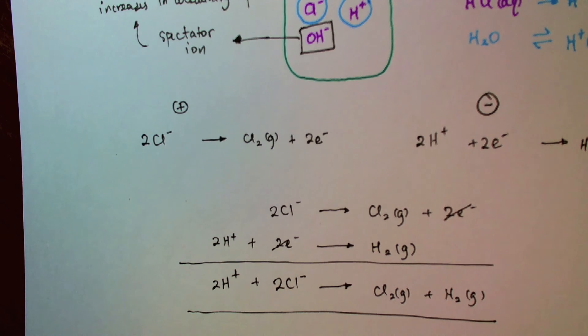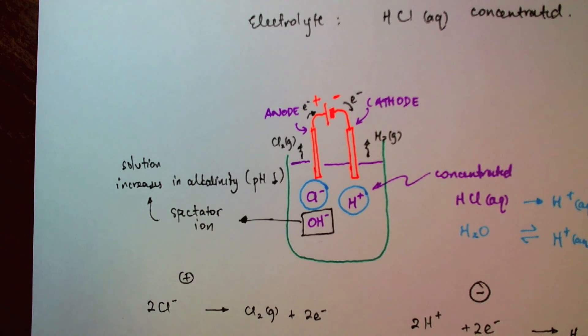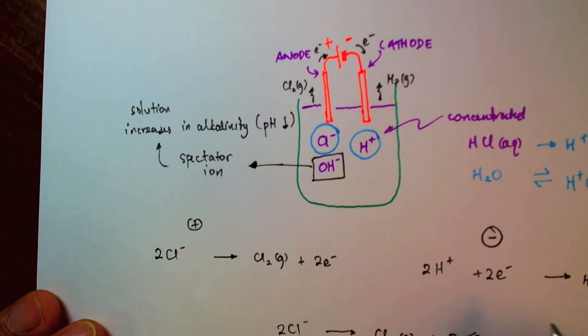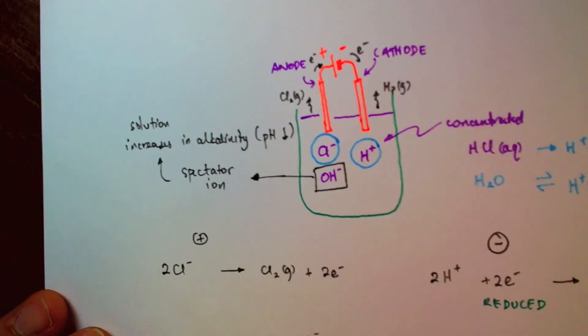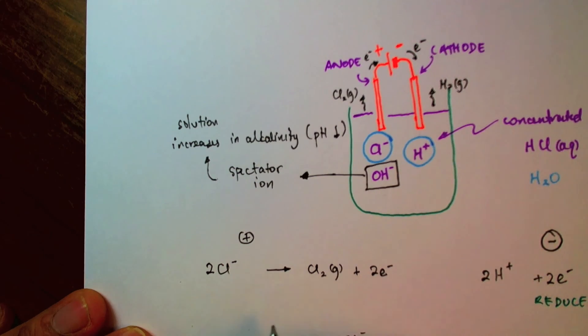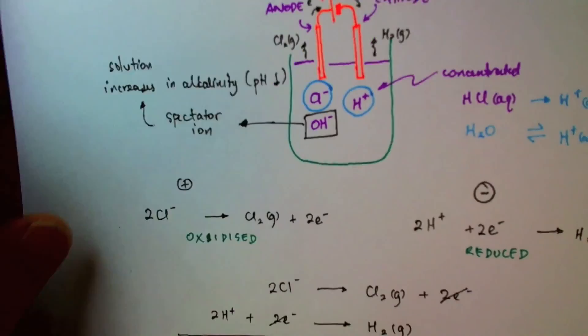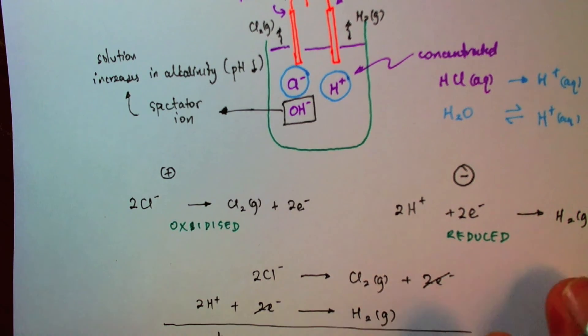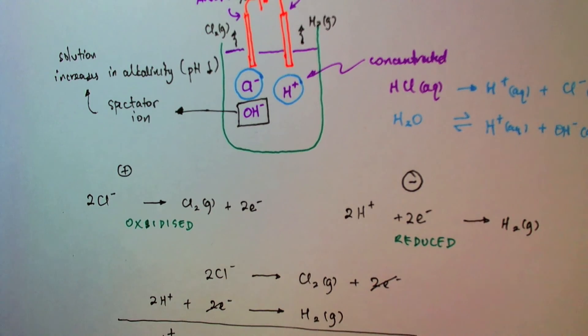So just for completeness, I will write here that the hydrogens are reduced because they received electrons. And since the chlorine gave up its electrons, it's oxidized. So if you're not familiar with oxidation and reduction, don't worry about this for now. Because I'll do a video on redox reactions, oxidation and reduction.